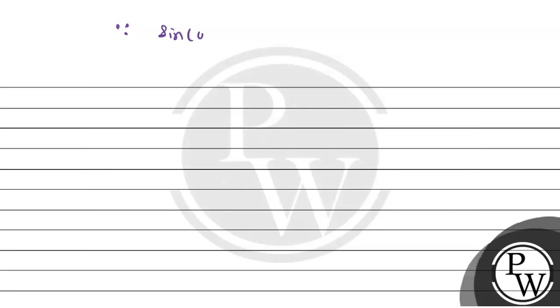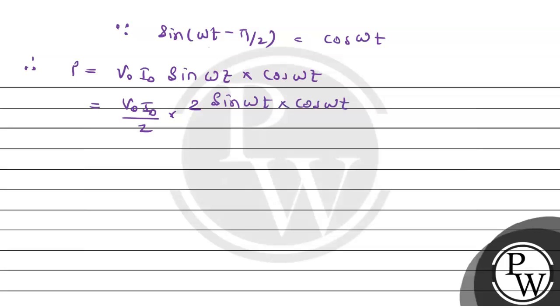Power is equals to V into I, that is V naught sine omega t into I naught sine omega t minus pi by 2. Now since sine omega t minus pi by 2 can be written as cos omega t, therefore power equals to V naught I naught sine omega t into cos omega t. We'll multiply and divide by 2, so V naught I naught divided by 2 and multiplied by 2.